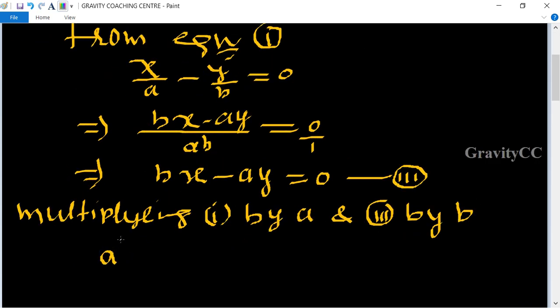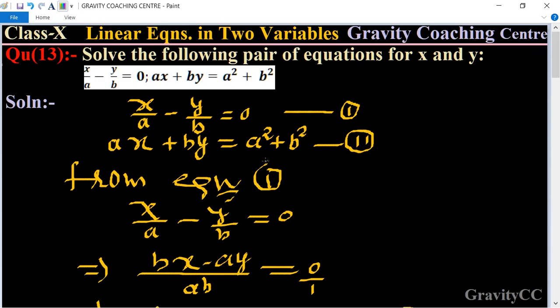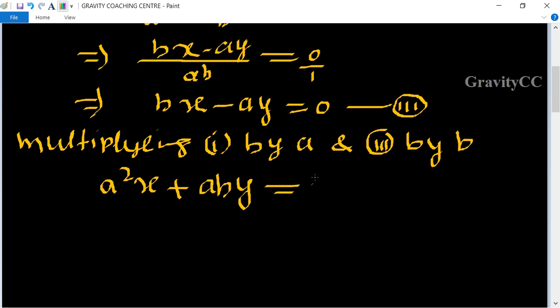Multiplying equation two by a: a²x + aby = a³ + ab².